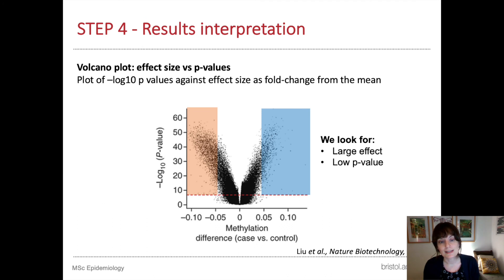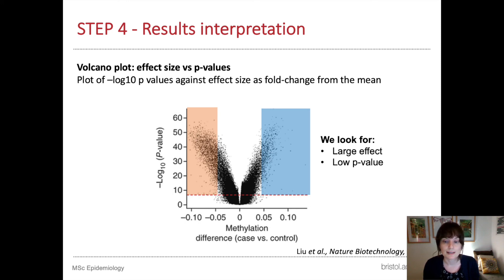Another way to visualise EWAS results is using a volcano plot. These show minus log10 p-values on the y-axis, but the x-axis shows the regression coefficient — the effect estimate. This plot allows us to visualise p-values and effect estimates simultaneously. CPGs with large estimates in either direction and small p-values are likely to be of most interest and are highlighted on this plot.